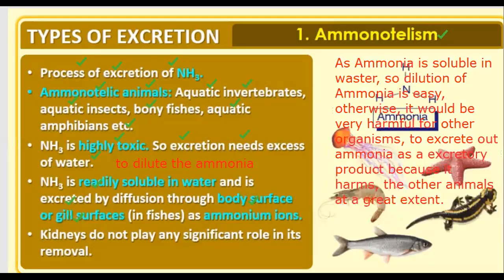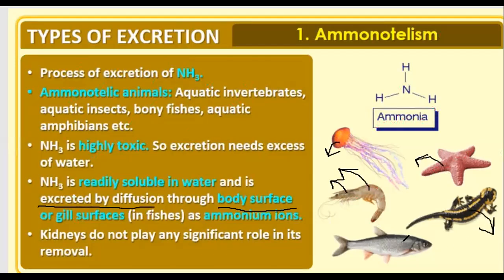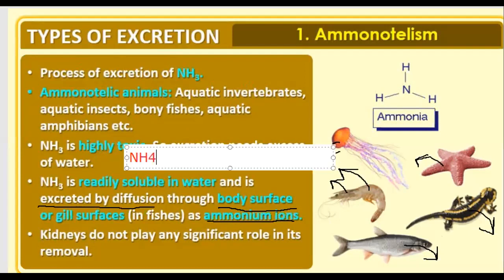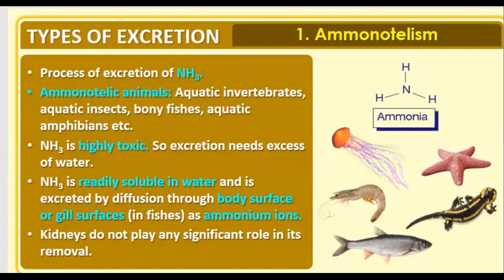Ammonia is highly soluble and readily soluble in water, so excretion can be done easily by diffusion. It can be excreted through the normal body surface. Echinoderms like starfish and Hydra can directly remove ammonia from the body. Bony fishes can also exchange ammonia from the gills as ammonium ions (NH4+). Kidneys do not play any significant role in the removal of ammonia.